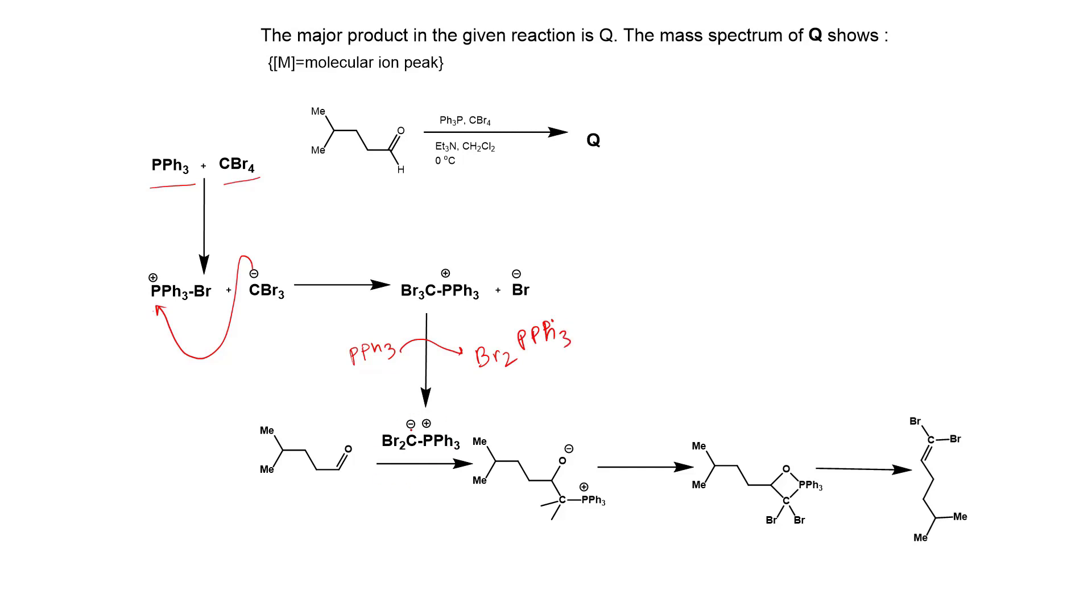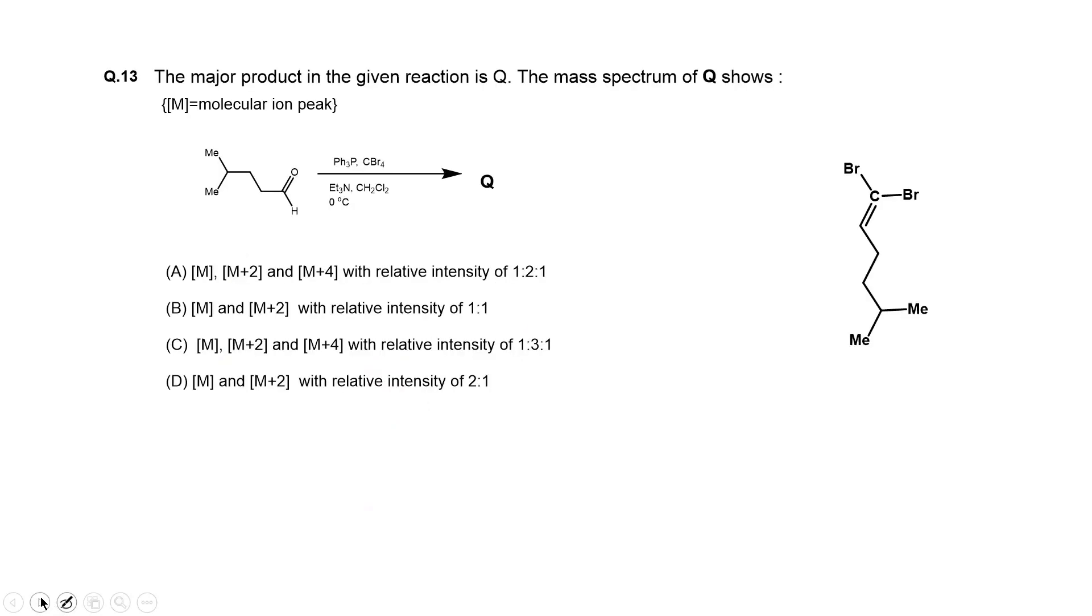So this ylide reacts with aldehyde to form this structure, as the negative and positive charges bind up to form this bond. Now this is not a stable structure. It opens up in a concerted process which gives us this gem-dibromoalkene. So our Q is 1,1-dibromoalkene.